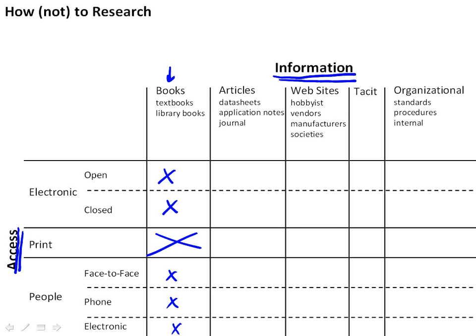In engineering, what's very critical — and perhaps the single most important source of information in much of our design — is articles, data sheets, application notes, and when you get more into research at a master's or Ph.D. and academic level, journal articles. Some of this is available in open-source electronic form, such as application notes and data sheets.